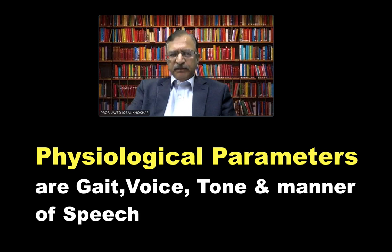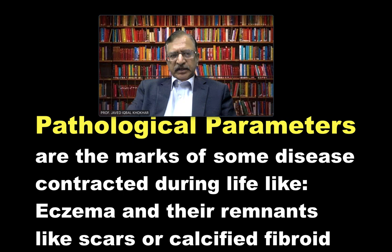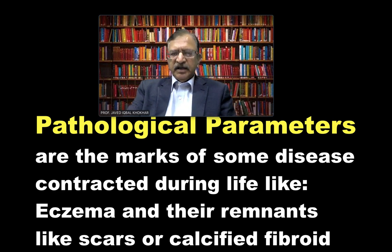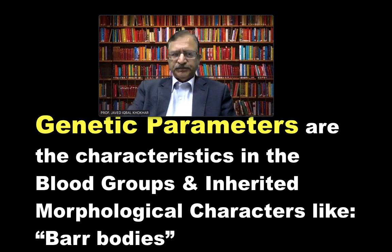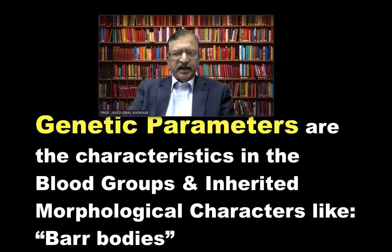The physiological parameters can include the gait, voice, tone, and manner of speech. The pathological parameters are marks of some disease contracted during life — like eczema and its remnants as scar, or a calcified fibroid — which can help in establishing identity. Regarding the genetic parameters, characteristics in the blood group or any other inherited morphological character — like Barr bodies or any other genetic material — are the genetic parameters.